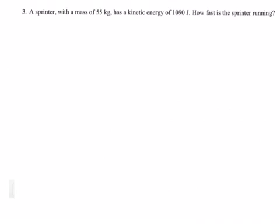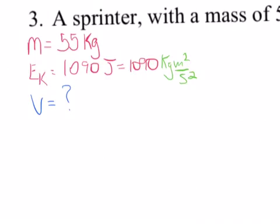This is number three. A sprinter has a mass of 55 kilograms and has a kinetic energy of 1,090 joules. How fast is the sprinter running? You will have to solve algebraically, and we'll go through the process. Always write down your knowns and givens, then your formula, your substitution, your answer with units. The givens are 55 kilograms, 1,090 joules — broken down into kilogram meters per second squared — and the velocity is our unknown.